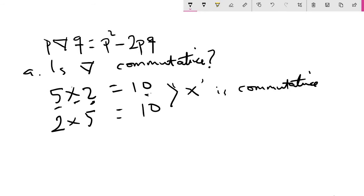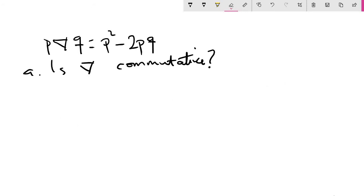So by asking us whether Delta is commutative or not, they are telling us that we should test if P Delta Q is equal to Q Delta P. If they are equal then it is commutative, but if they are not then it is not commutative. So let's test it.